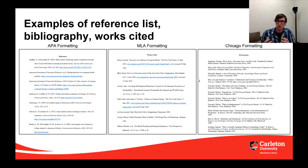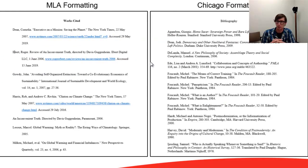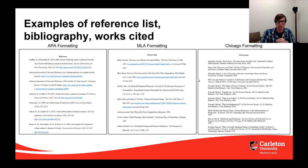Since there are a lot of different citation styles, I just wanted to show you examples of a reference list, a works cited page, and a bibliography page in some of the different styles. You can see we have an APA format, an MLA format, and a Chicago format. While formatting does change between them, they do contain a lot of the same information.